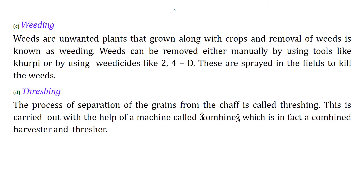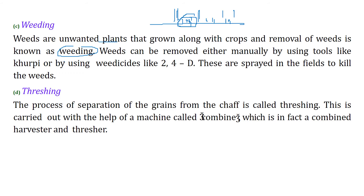Weeding: when your crop grows, other plants will also grow naturally alongside it. These are unwanted for us because they consume the nutrients meant for the crop. Weeds are unwanted plants that grow along with the crop, and their removal is known as weeding. You can remove them manually using a khurpi, or use weedicides like 2,4-D.